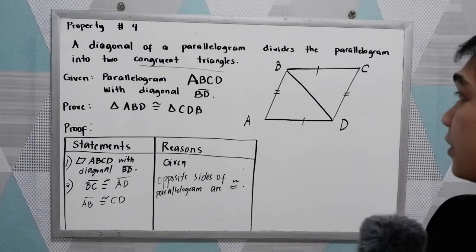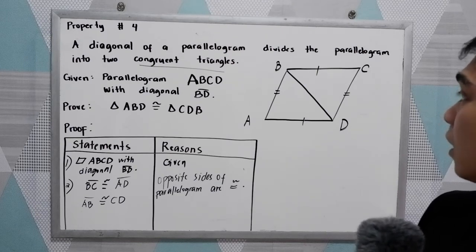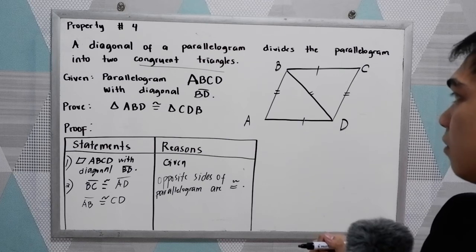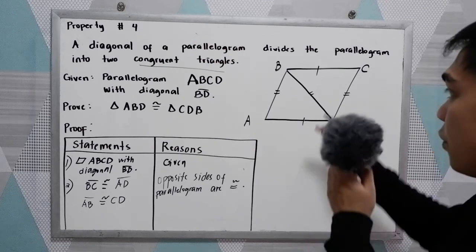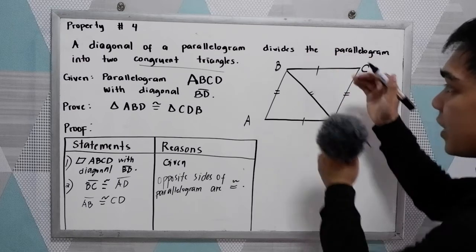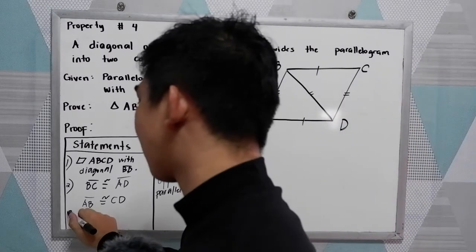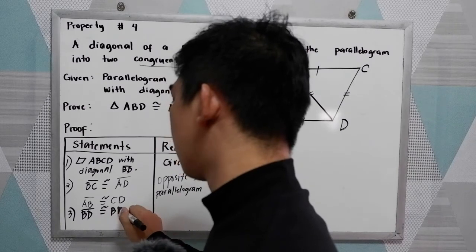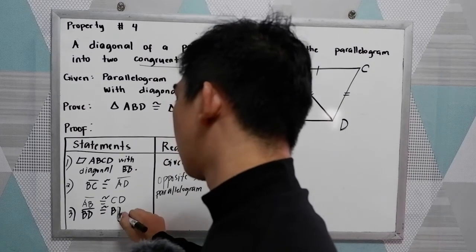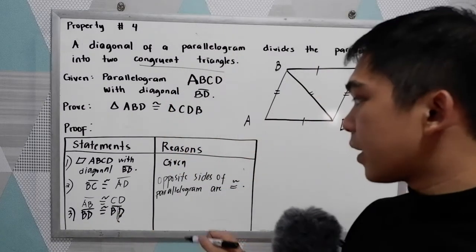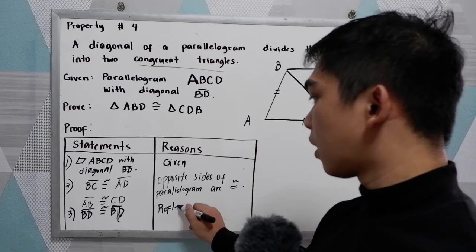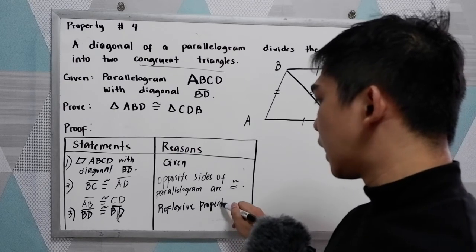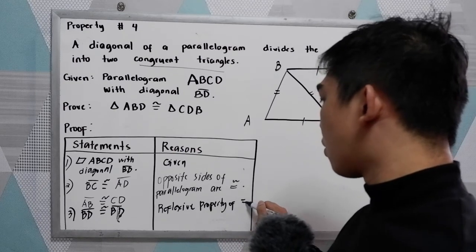Now, our third statement: we know that BD is equal to BD. So if we're going to split the two triangles, we can say that BD is congruent to BD. That is according to our reflexive property of congruence.